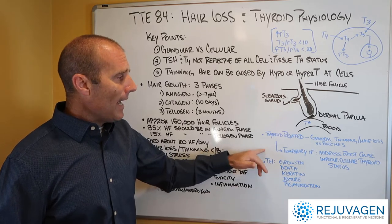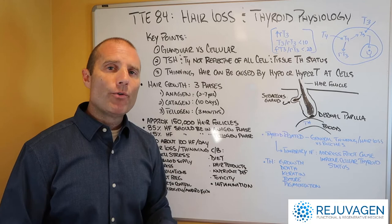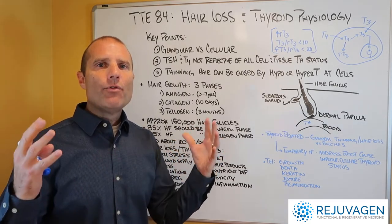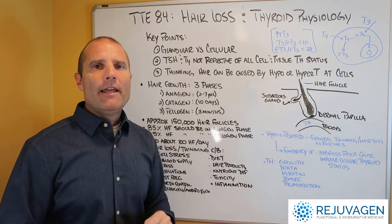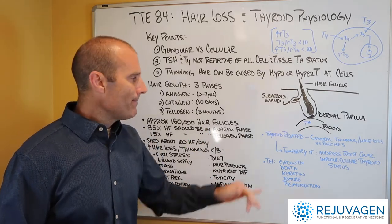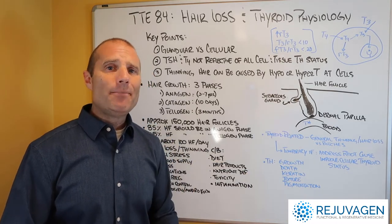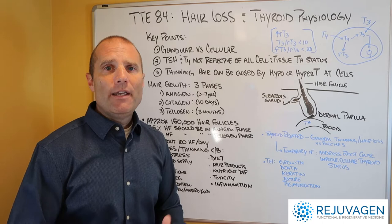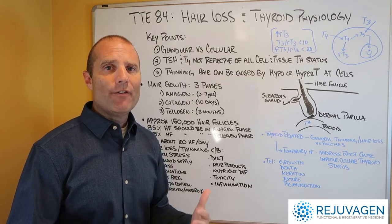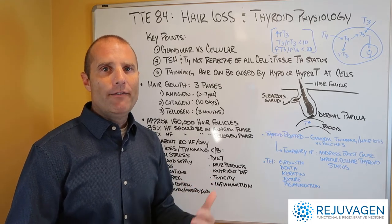If you have a thyroid physiology issue impacting your hair growth, we typically see a generalized thinning through the whole head of hair. If it's some other form, we might see more patchy hair loss. The good news is that if it's a thyroid-related problem, it's typically a temporary issue. If we can restore normal thyroid physiology to the hair follicles, then we can get the return of a normal head of hair.